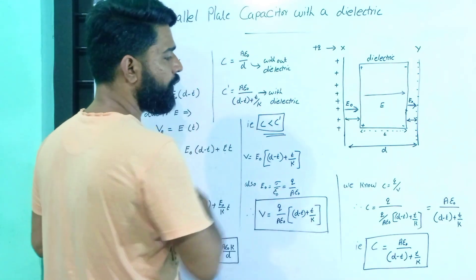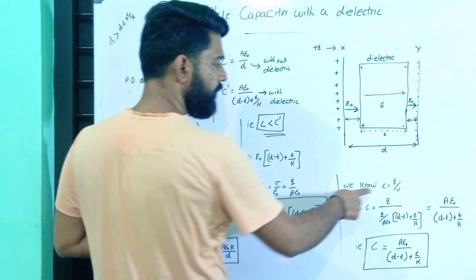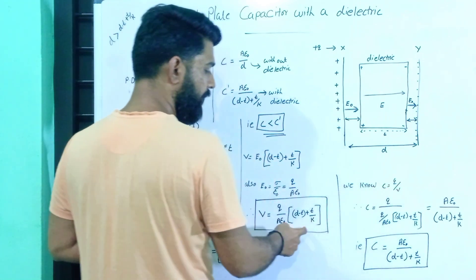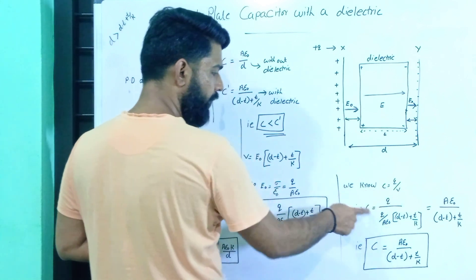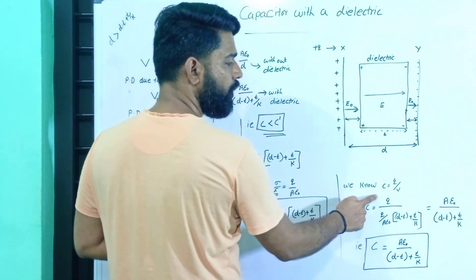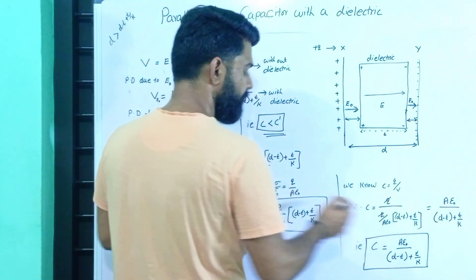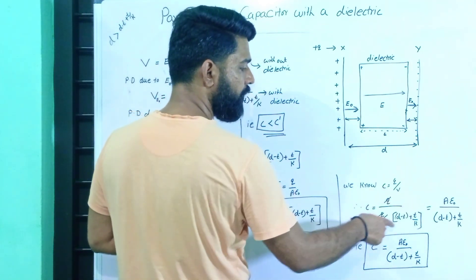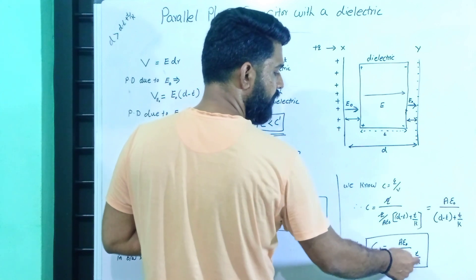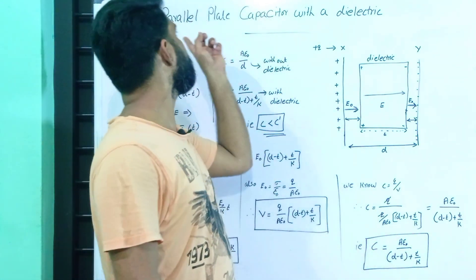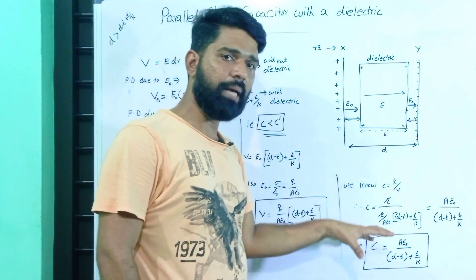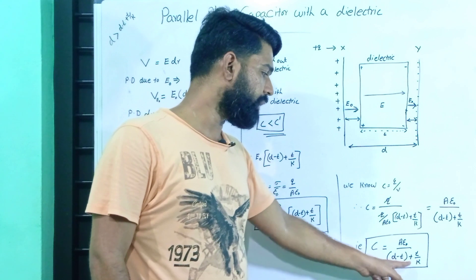Now we find the capacitance equation. Capacitance C is equal to Q by V. Substituting the V value, C is equal to Q divided by [Q by Aε₀ into (d minus t plus t by K)]. The Q cancels, and the capacitance with dielectric, C prime, equals Aε₀ divided by (d minus t plus t by K).